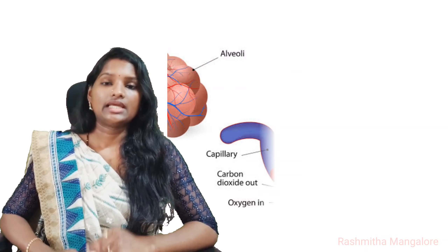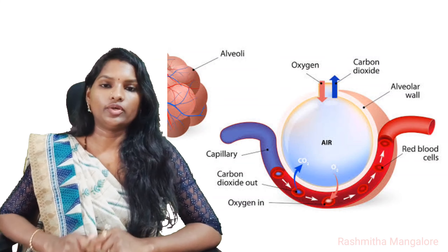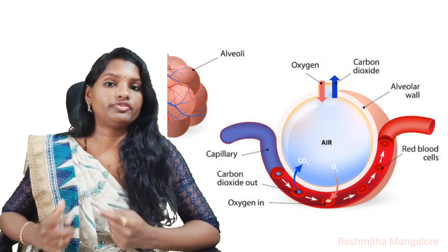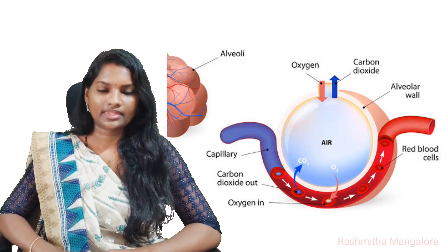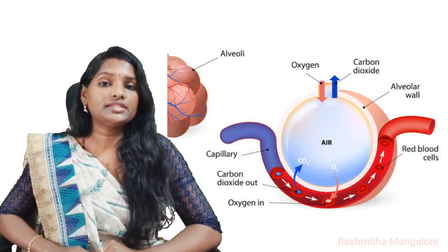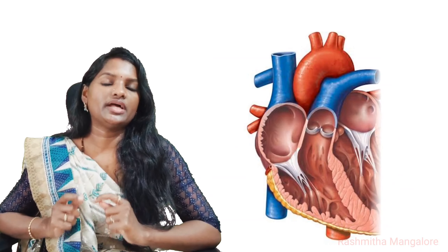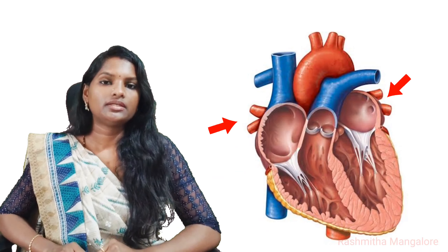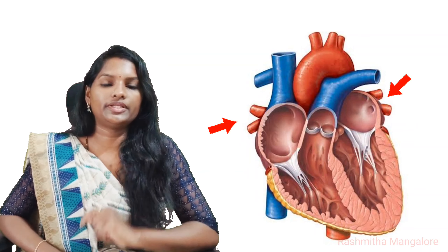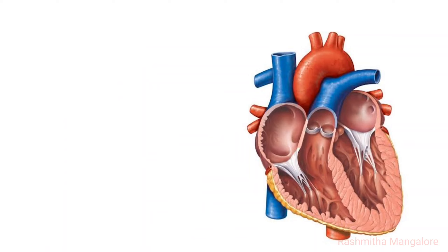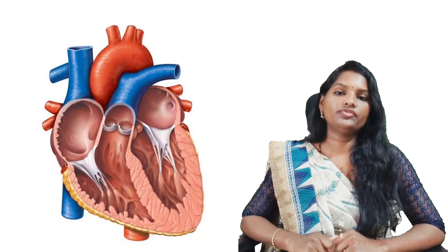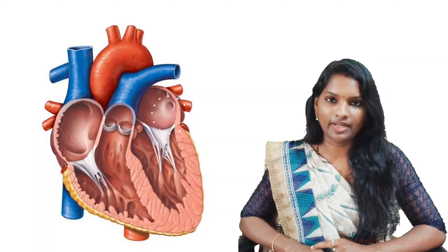The deoxygenated blood in the lungs is oxygenated in the alveoli through the diffusion of gases. Once this blood is oxygenated, it travels back to the heart through the pulmonary vein. The left atrium of the heart then receives this oxygenated blood from the pulmonary vein.